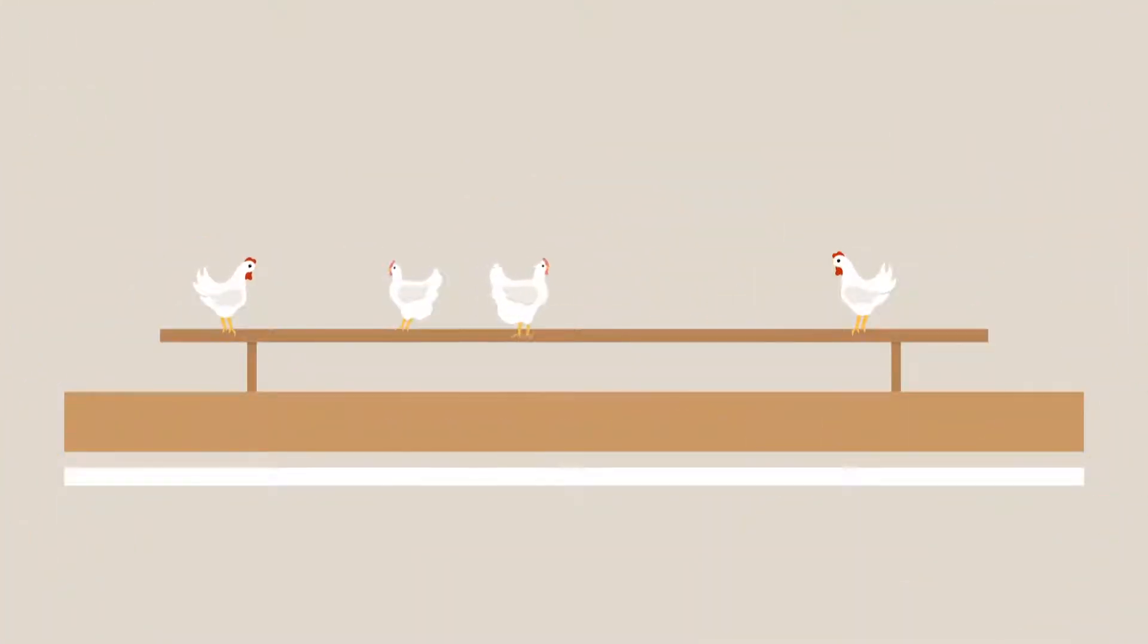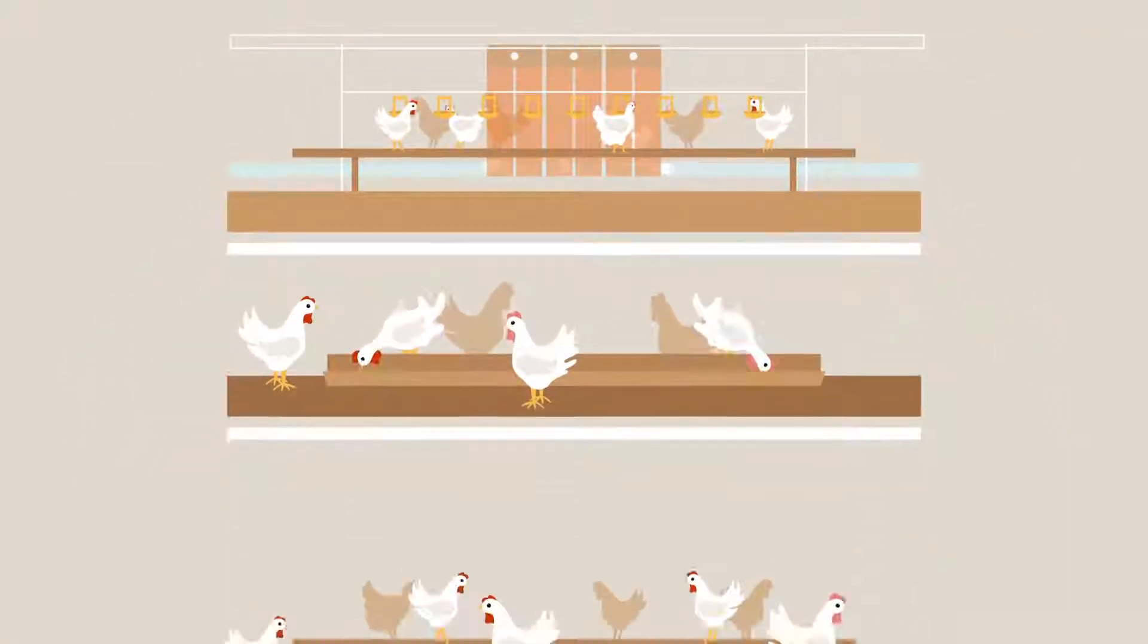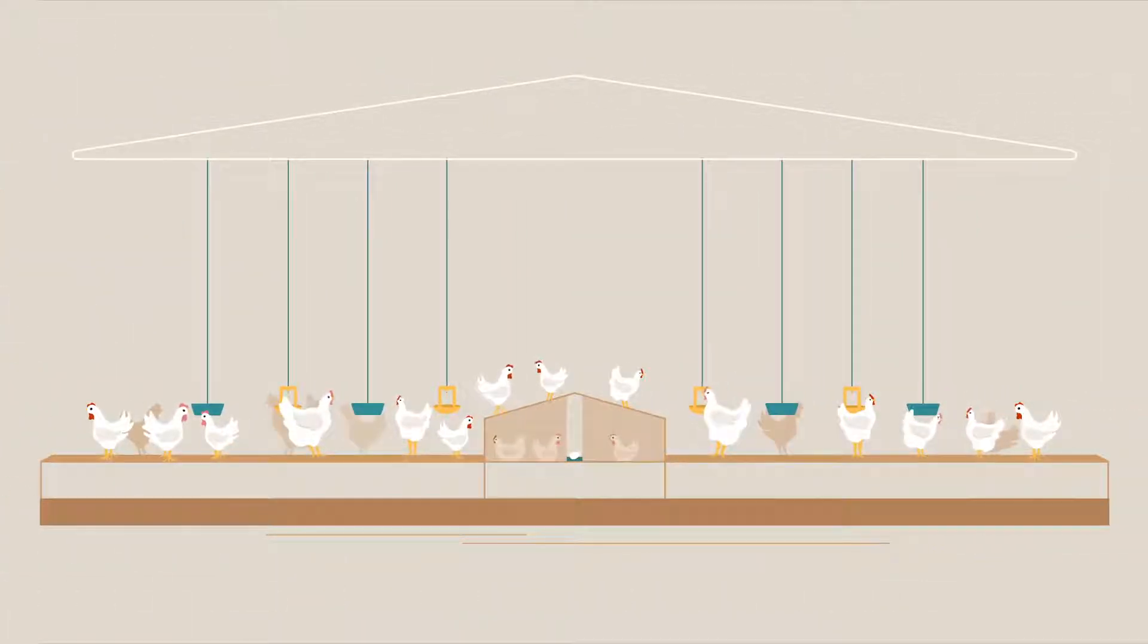In cage-free, hens are kept inside barns with equipment that allows them freedom to move about the barn with special places to exhibit natural behaviors. There are two types of cage-free housing, cage-free aviary and cage-free floor. Take a look at the features of both.